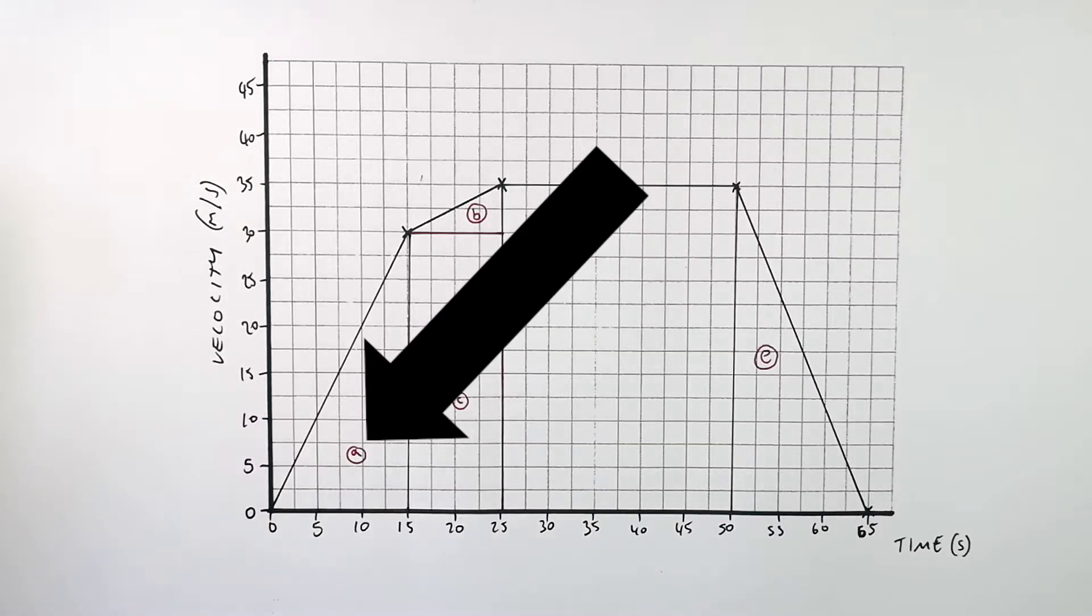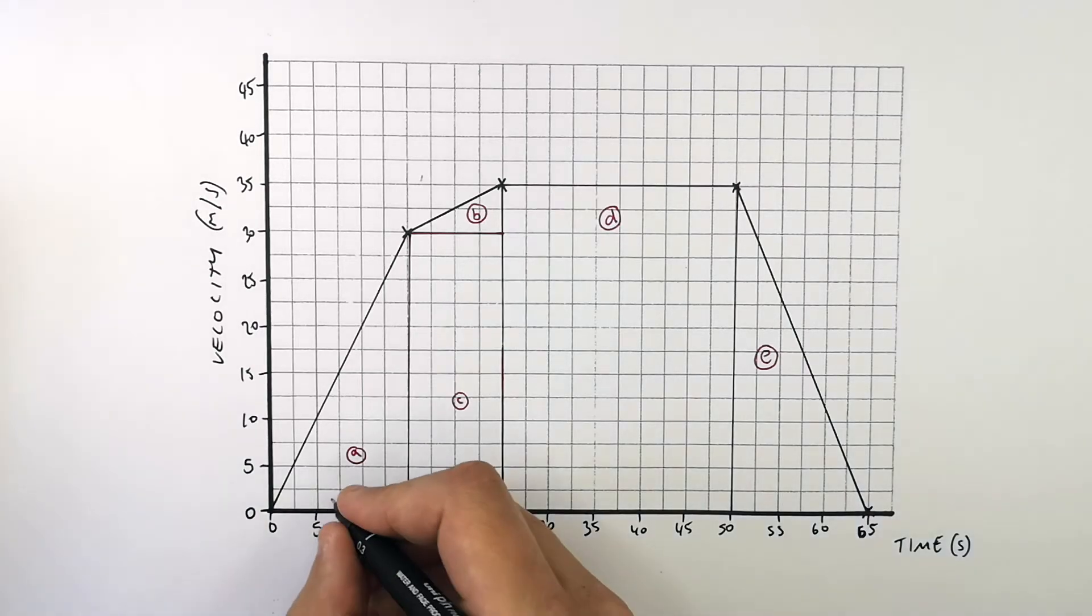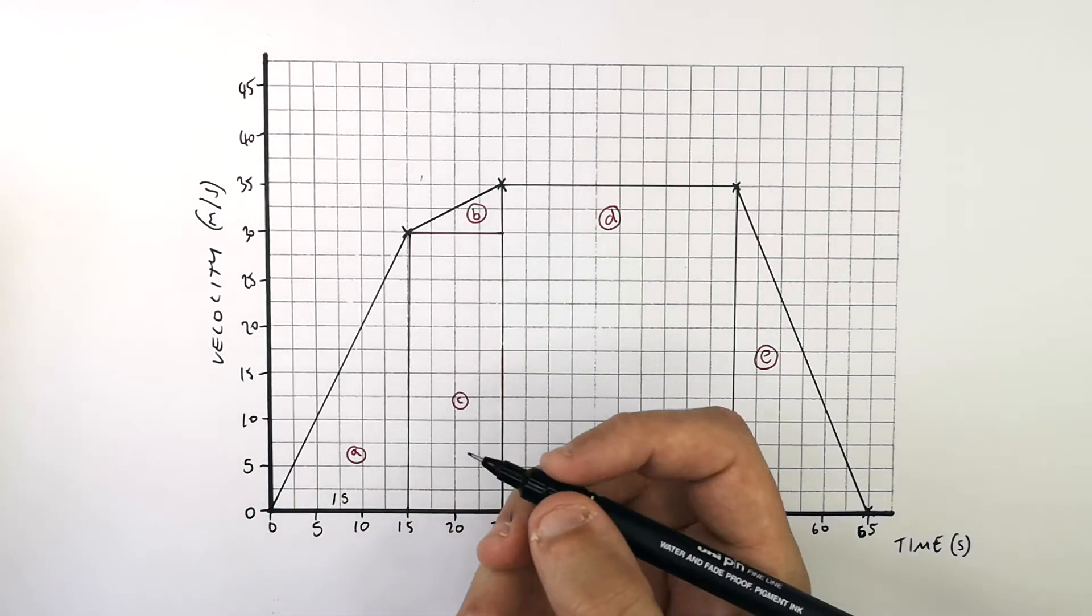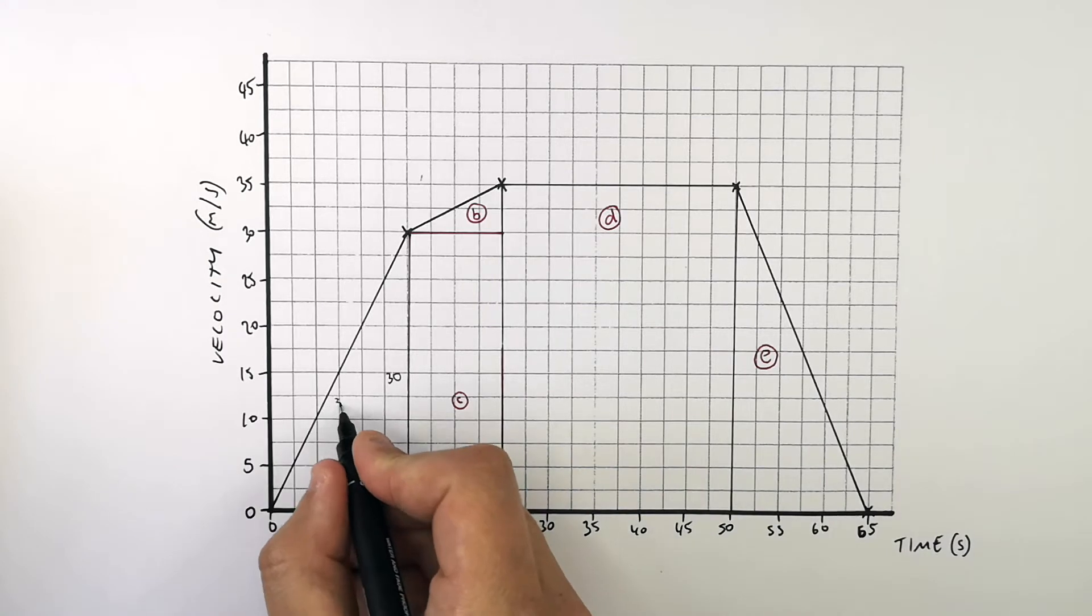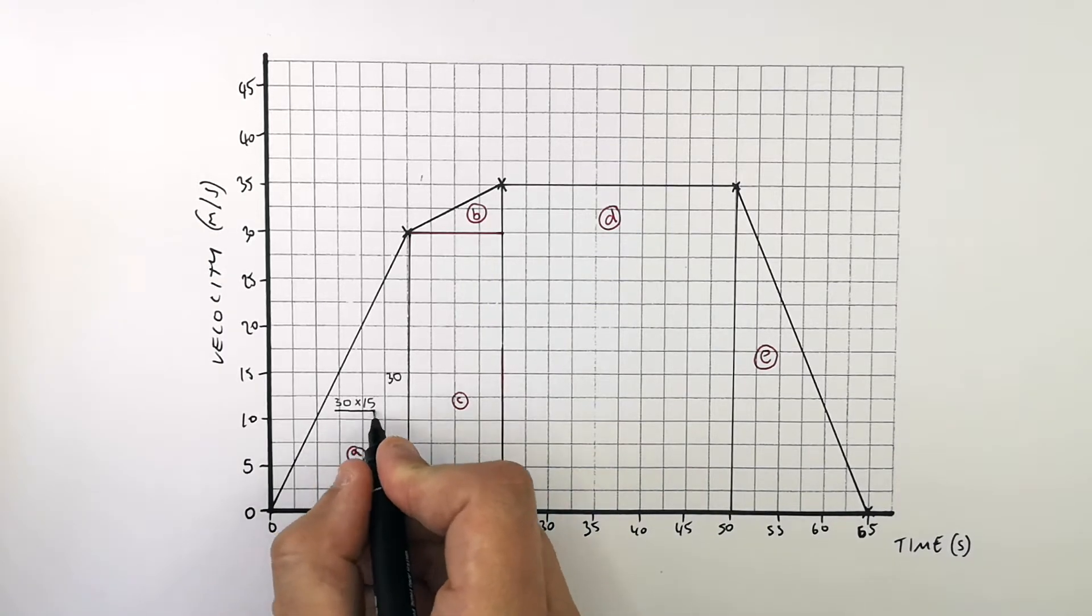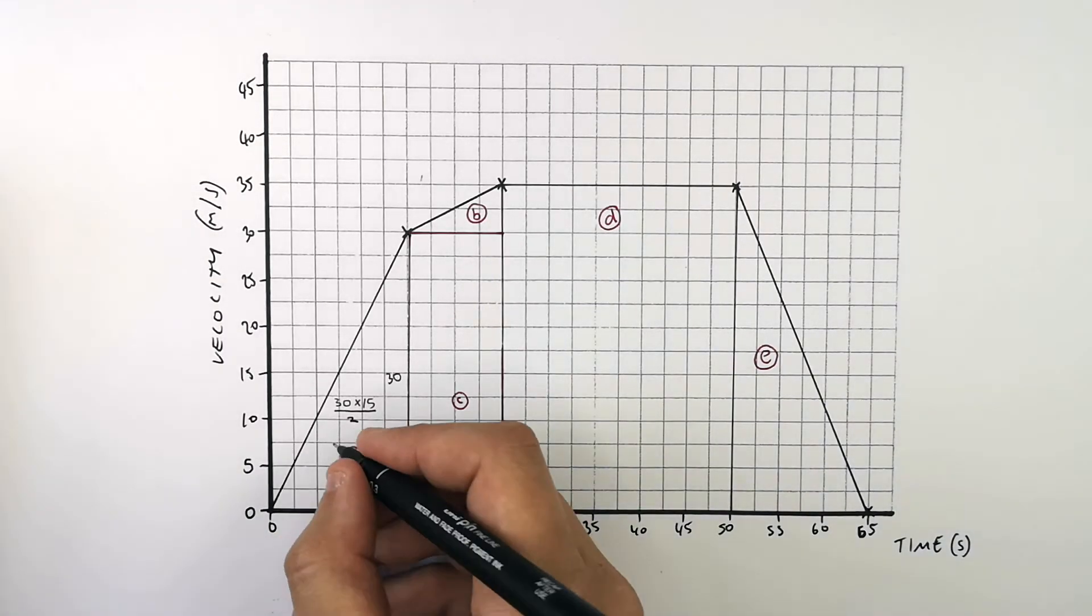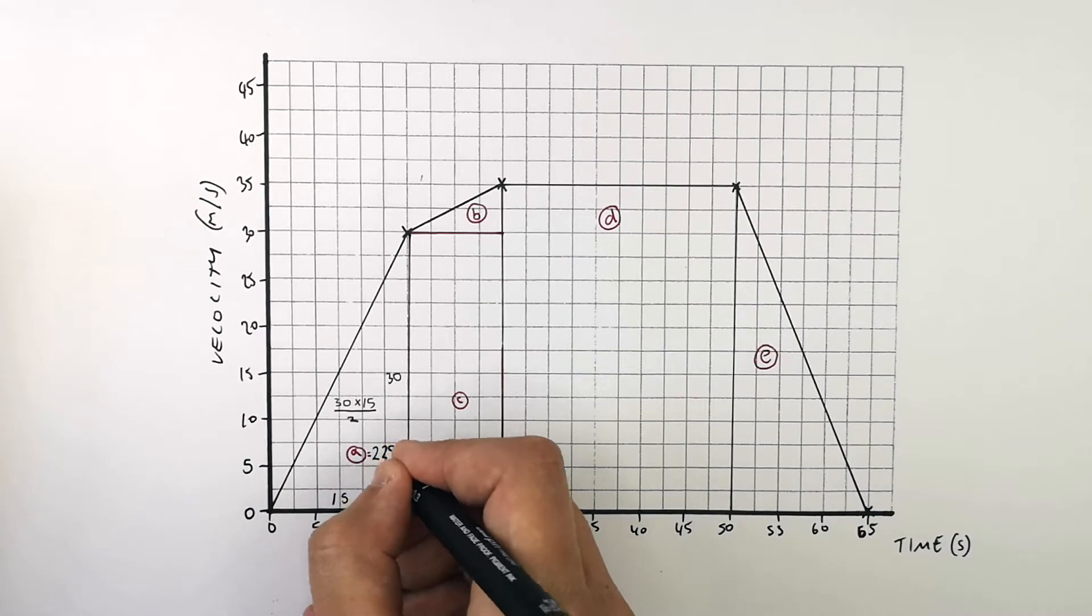So this first shape of the graph is a triangle so you must use base times height divided by 2. The base is 15 minus 0 which is 15 and the height is 30. So then you use base times height divided by 2. So that will be 30 times 15 divided by 2 which gives you an answer of 225 metres.